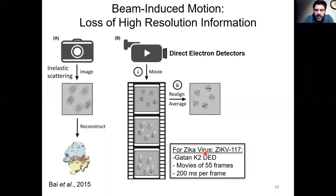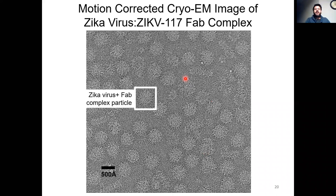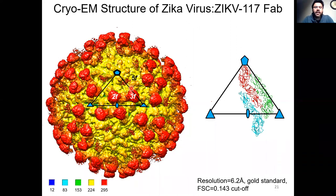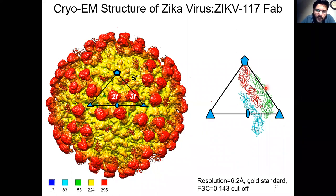Using this technology, we collected several thousand movies of the Zika virus complex with ZIKV-117. Shown here is a motion-corrected cryo-EM image of the Zika virus FAB complex, with one Zika virus particle highlighted that is covered on its surface with FABs. Shown here is the result of a cryo-EM reconstruction achieved by averaging together 50,000 to 60,000 Zika virus particles. This cryo-EM map shows the envelope proteins in yellow and the FAB fragments bound on the viral surface as red knobs. The triangle shown is the same icosahedral asymmetric unit as before.